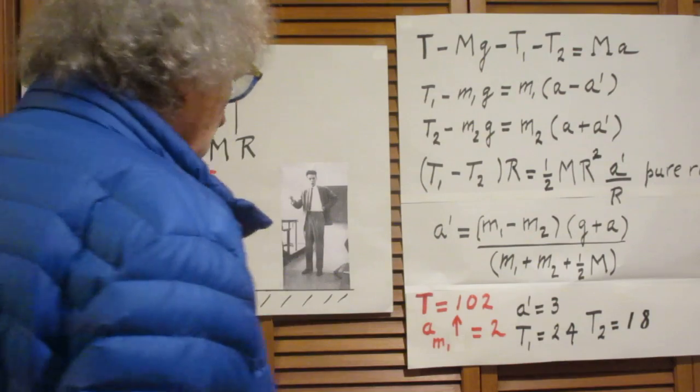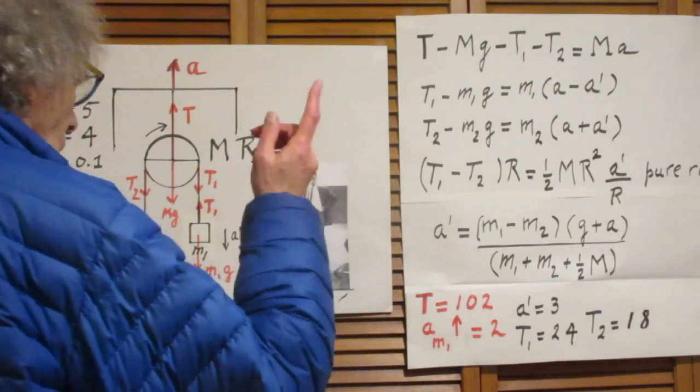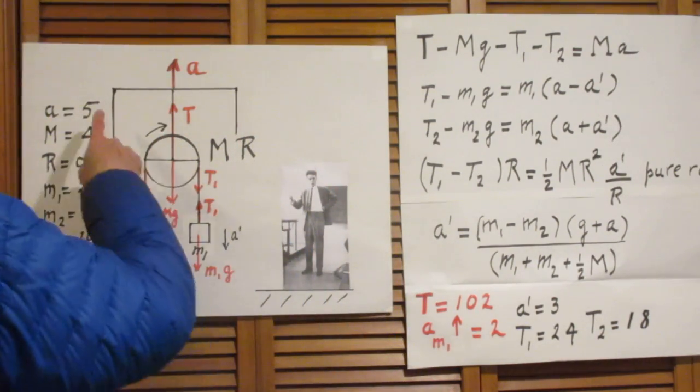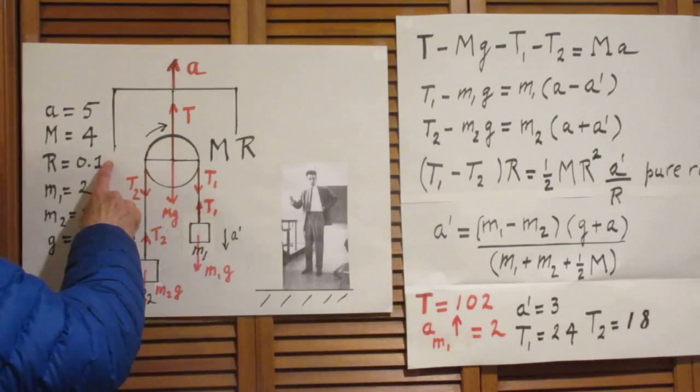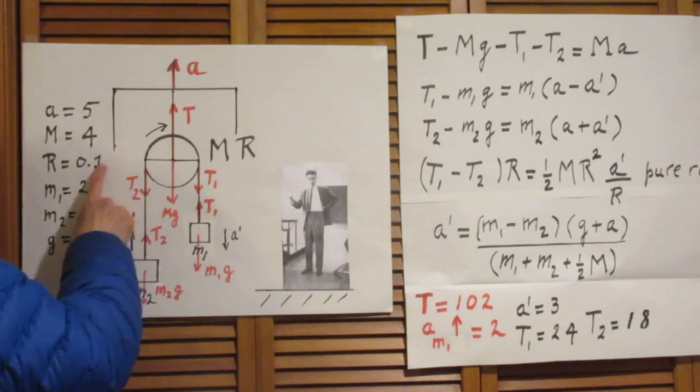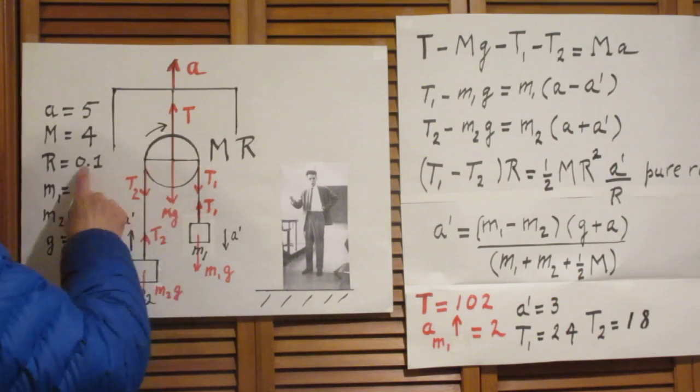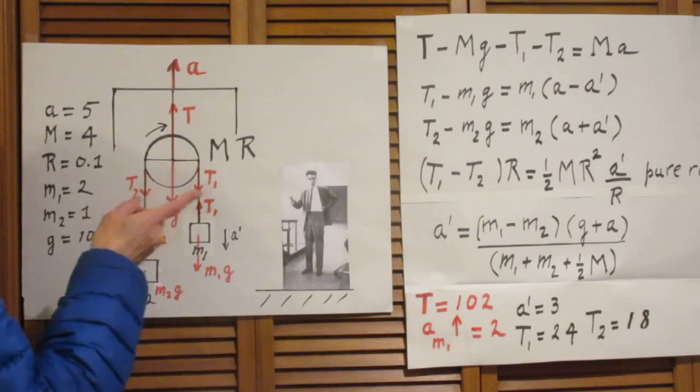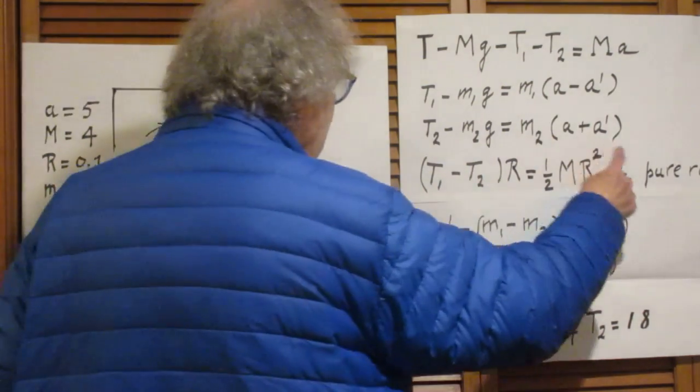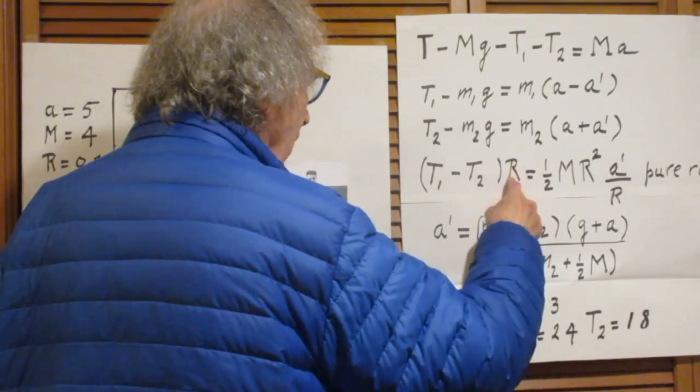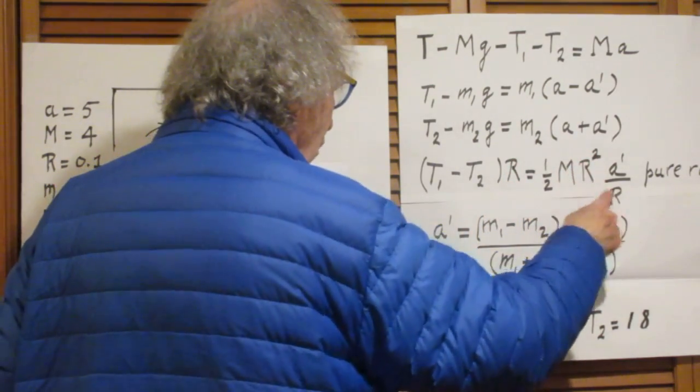So if now we substitute these numbers that we have: 5 meters per second squared, 4 kilograms, 0.1 meters. Did you notice that capital R doesn't enter into anywhere? Isn't that interesting? Look at this equation. This R, R squared over R, cancelled.